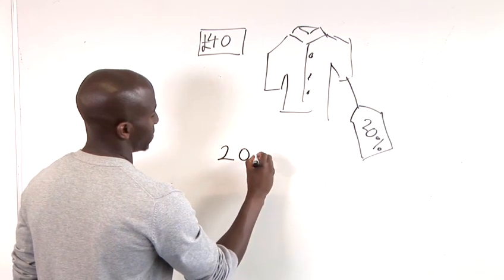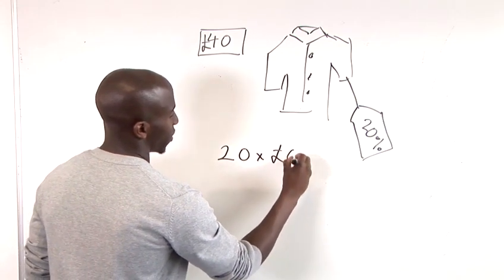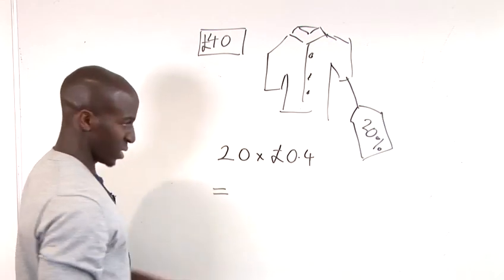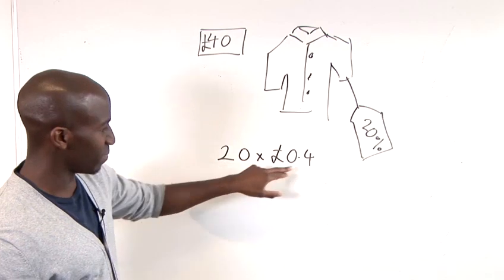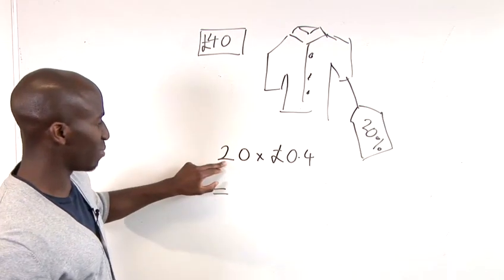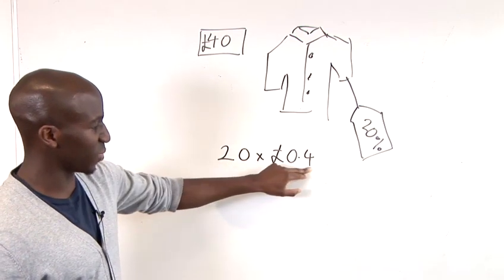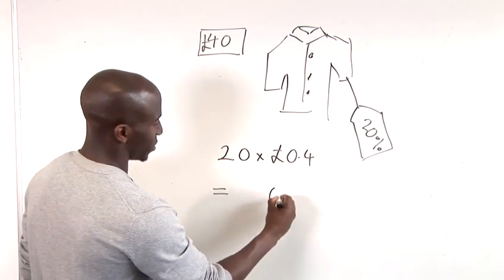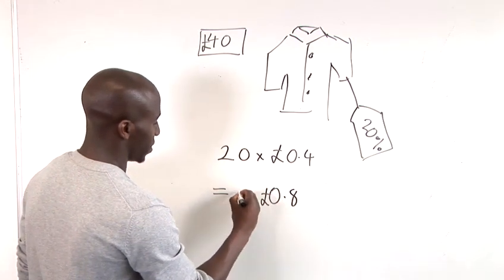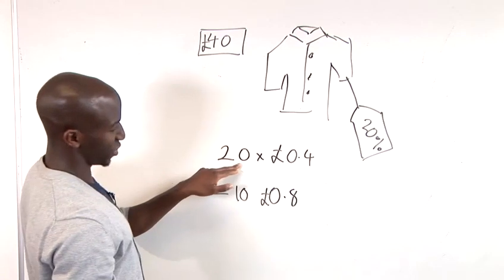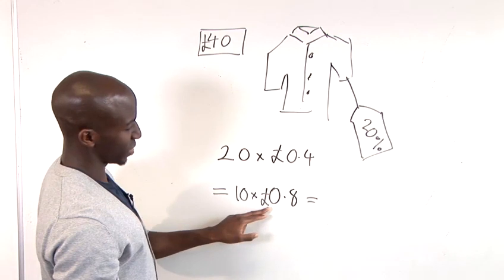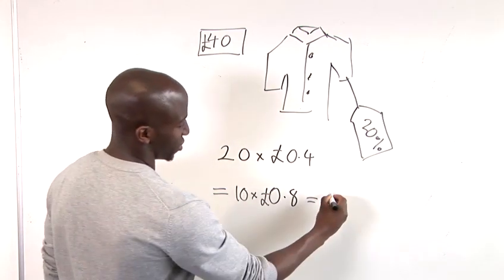20 times 0.4 gives us the following. If we want to multiply 20 by 0.4, the easiest thing to do is, first of all, multiply the 2 by 0.4. That will give us 0.8 pounds. And we still have the multiplication of the 10 here. So, that will give us 10 times 0.8 pounds, which is just 8 pounds.